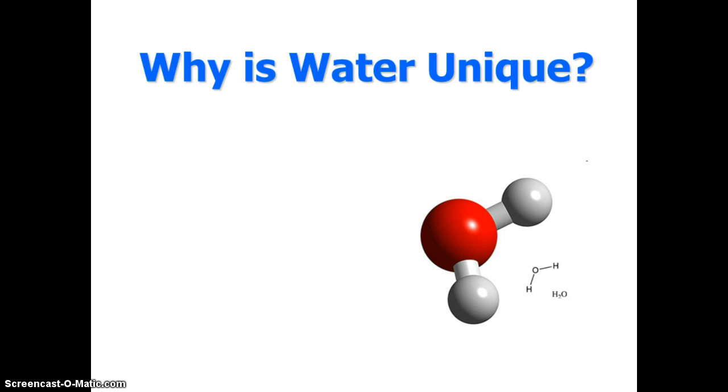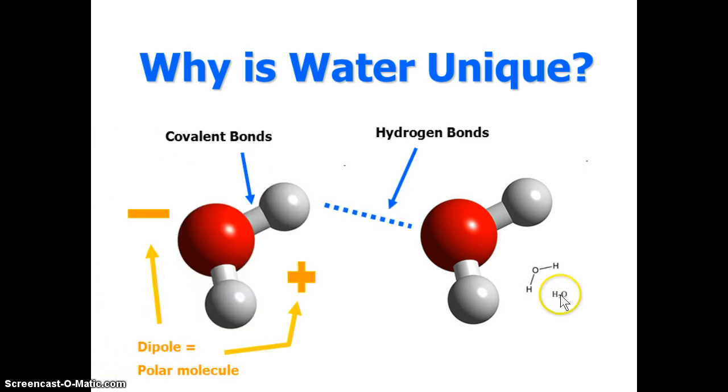So why is water unique? Essentially water, hopefully most of us know, is made up from one oxygen molecule and two hydrogen molecules. It takes this angular shape, and the molecular formula is H2O. What makes water so special, so unique, and even gives it its shape, we call that stereochemistry.